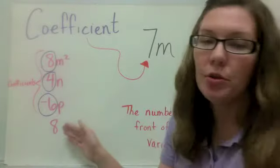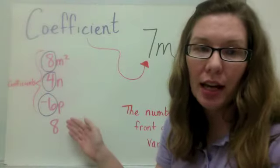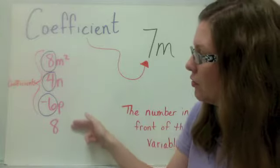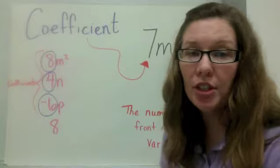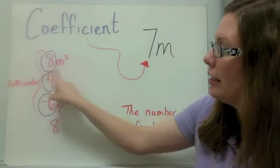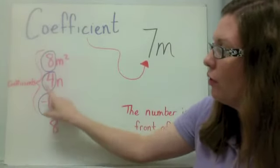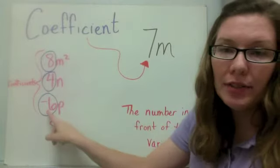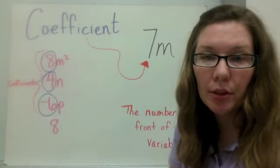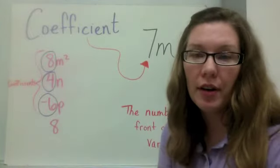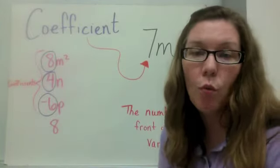So if we look at our terms from the expression on the previous slide, we have these terms, these four terms, and three of them that had variables also have coefficients. We have 8 in front of the m squared, we have 4 in front of the n, and negative 6 in front of the p. Those three numbers are considered coefficients. Now if there is no number in front of the variable, it's understood that it's 1.